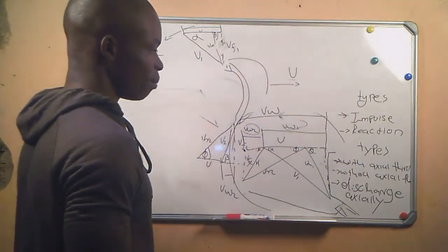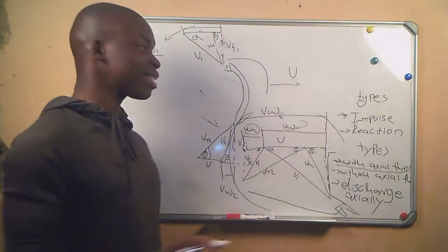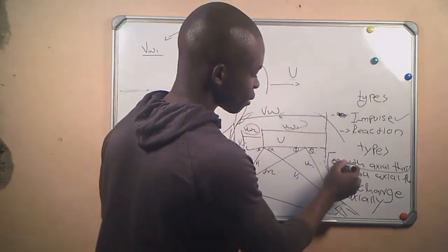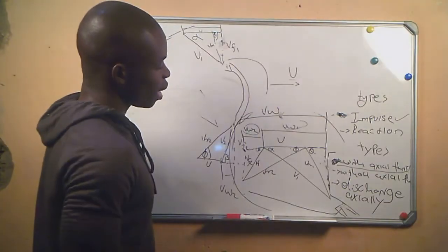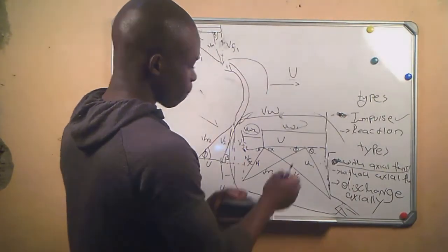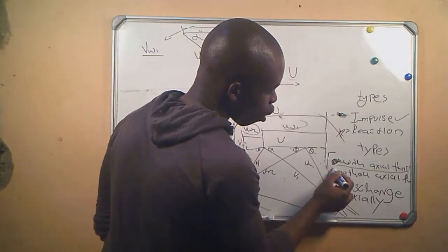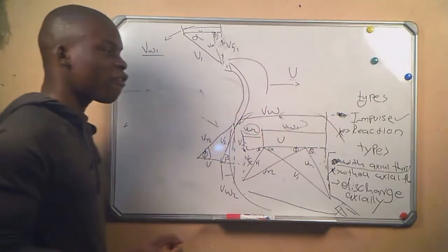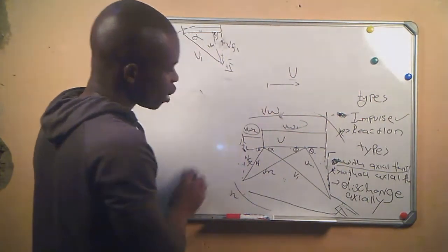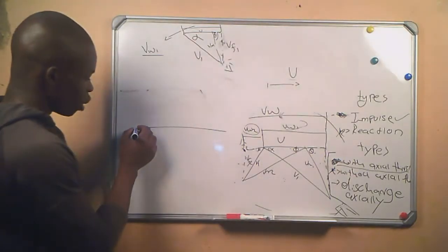The velocity diagram of a turbine with axial thrust corresponds to the impulse turbine. The velocity diagram of a turbine without axial thrust corresponds to the reaction turbine. Whenever you are told that the velocity diagram is for a turbine without axial thrust, what you have to keep in mind is that these two points will be on the same horizontal line.